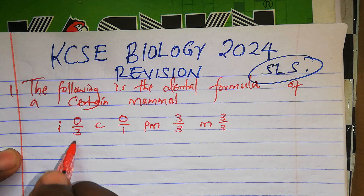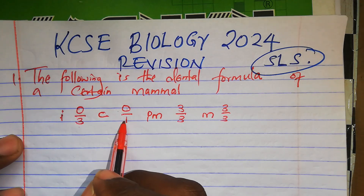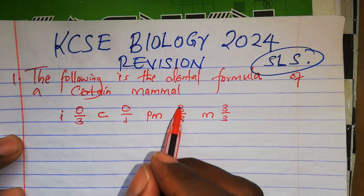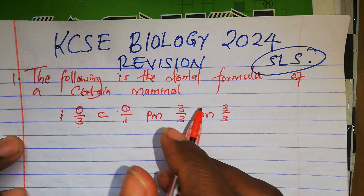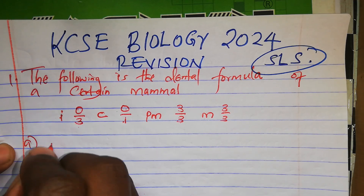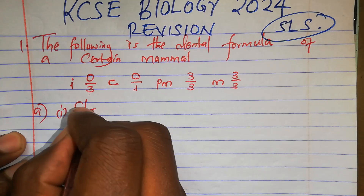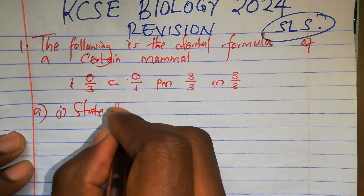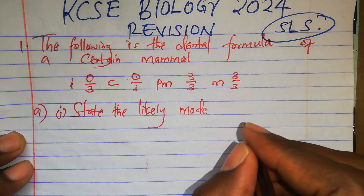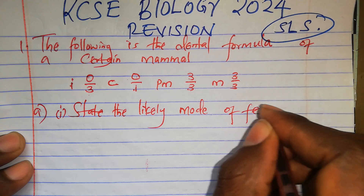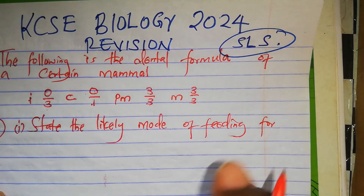On the upper jaw we have 0 incisors, lower jaw 3. Canines: upper jaw 0, lower jaw 1. Premolars: upper jaw 3, lower jaw 3. And molars: upper jaw 3, lower jaw 3. Part A, Roman 1: state the likely mode of feeding for the mammal.